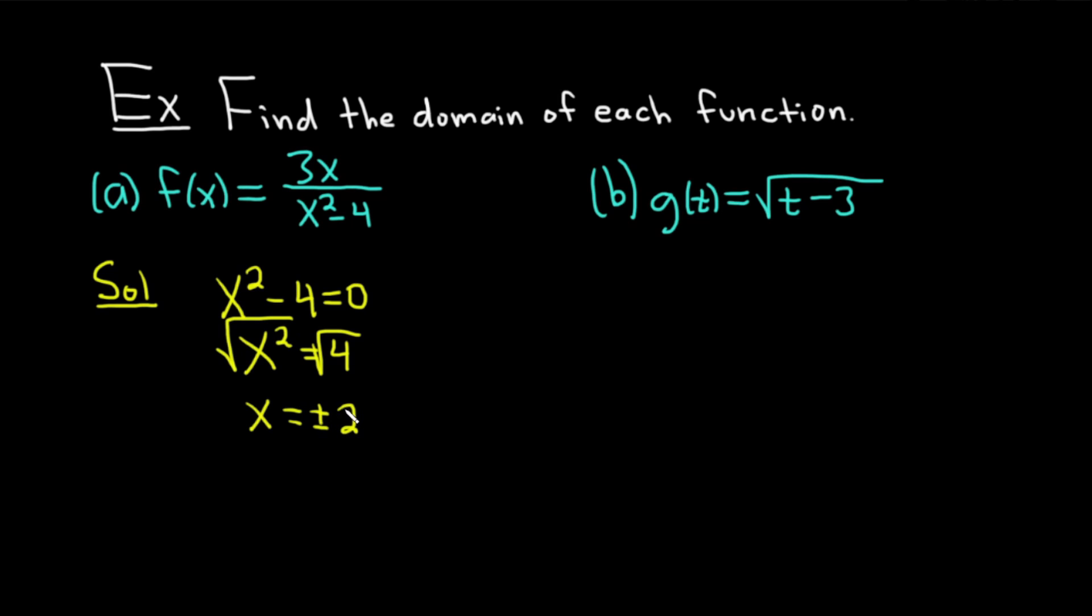So the domain is all numbers except these. So it's every single number except plus or minus 2. So the domain is all numbers, all real numbers, except x equals plus or minus 2.